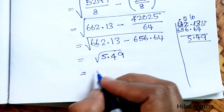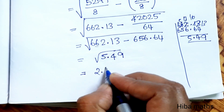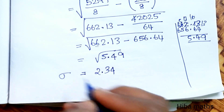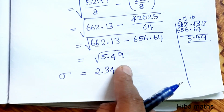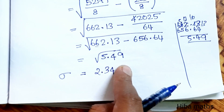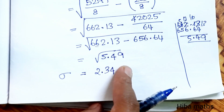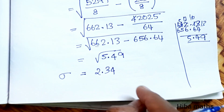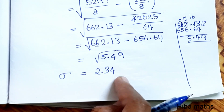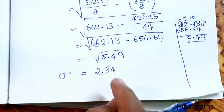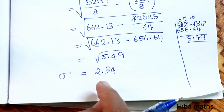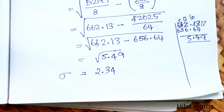When you find the square root, the answer is 2.34. This is the standard deviation value. There is a video about how to find square roots on the Hypermax portal. Thank you so much for watching.